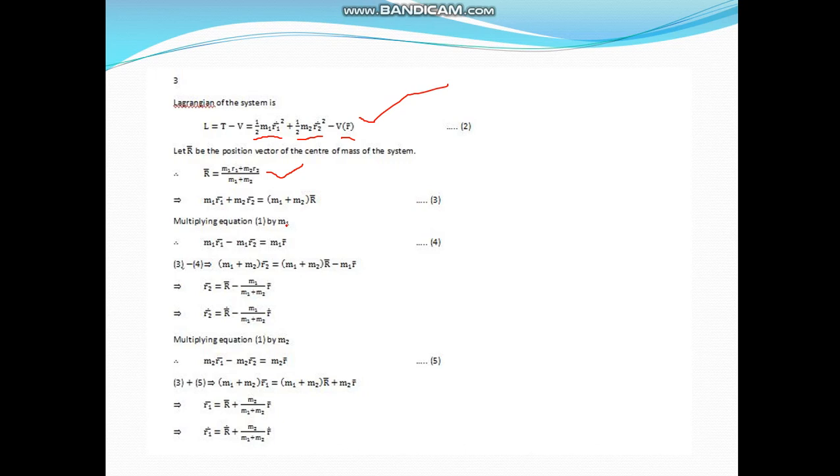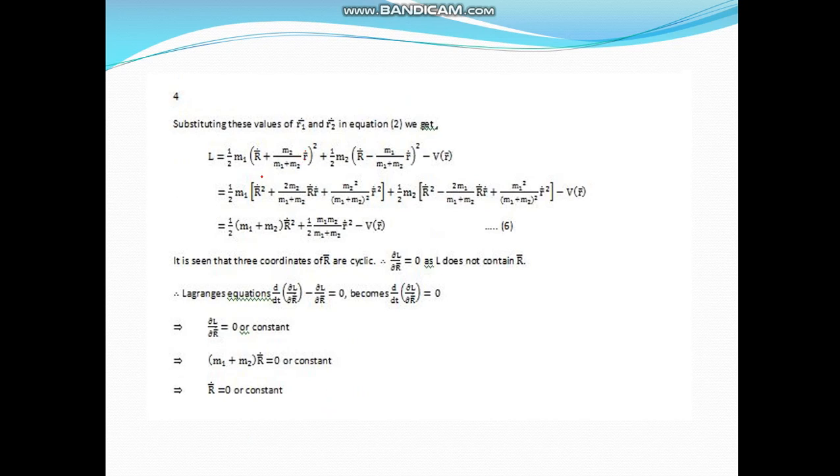See equation number 1. Multiply equation 1 by m1 to get this result. Equation 3 minus equation 4 gives the value of r2. From there we can find r2 dot. Similarly, multiply equation 1 by m2 to get equation 5. Equation 3 plus equation 5 gives r1, and from that we get r1 dot. Now we have r1 dot and r2 dot. Simplifying using algebraic expansions gives equation number 6.